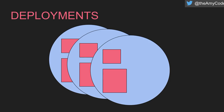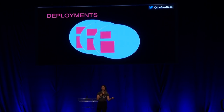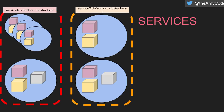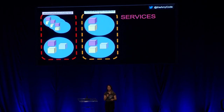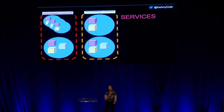A deployment is one or more pods. The idea is you have actual versus desired state — let's say you have a deployment of three. You always want to make sure that three pods are up and running. Then there are services, where you group together deployments or pods and you always want to be able to reach them via an address within your cluster. So you can have something like service A or service B, or front end and back end, and they'll always be able to reach each other within the cluster.